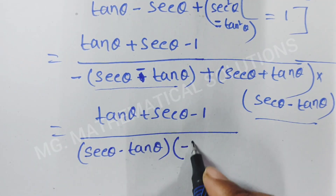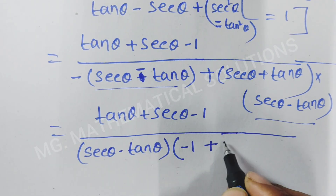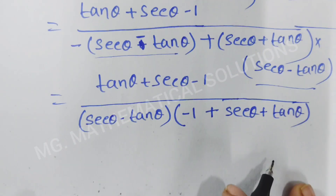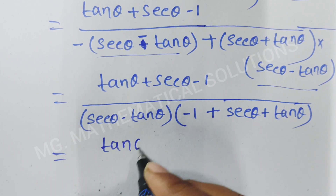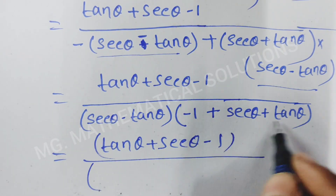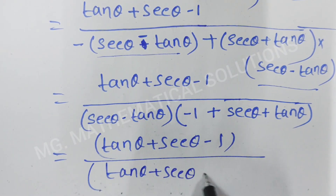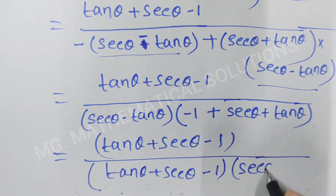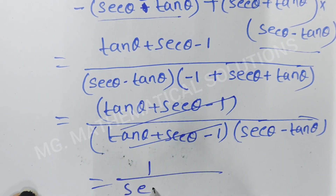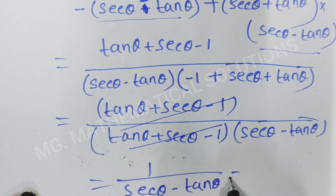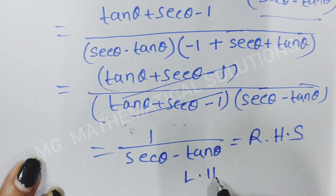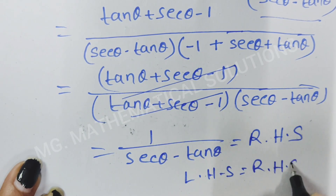So we have minus 1 plus sec θ plus tan θ. This equals tan θ plus sec θ minus 1, over tan θ plus sec θ minus 1 times (sec θ minus tan θ). These two terms cancel, so we get 1 by sec θ minus tan θ. This is the right hand side. Hence left hand side equals right hand side. Proved.